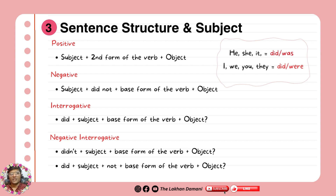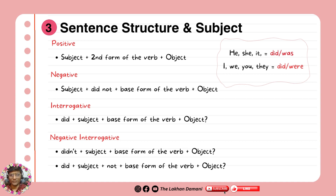For interrogative, the structure is: did + subject + base form of the verb + object. You don't need to think about the past form. For example, you don't say did I went to school — you say did I go to school? So you're asking a question. That's a very important point you have to always understand when you're speaking.